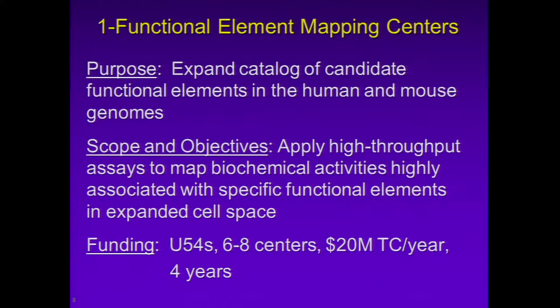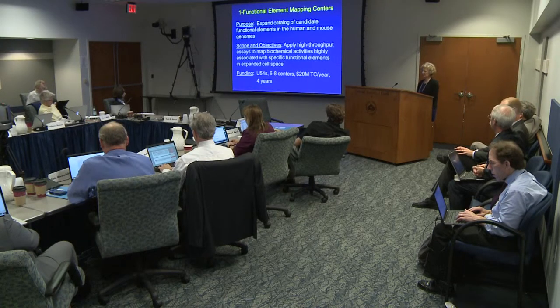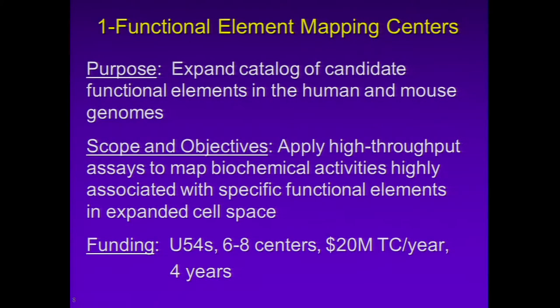I'm going to describe in more detail the first of the four initiatives: functional element mapping centers. The purpose is to expand the catalog of functional elements in the human and mouse genome by applying high-throughput assays to map biochemical activities that are highly associated with specific functional elements, and expand the cell space to include disease studies. The idea is to support both technologies currently being used in ENCODE as well as new technologies. For funding, we want to use a cooperative agreement U54 mechanism to fund between six and eight centers for a total level of 20 million dollars per year in total costs for four years.